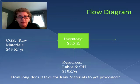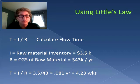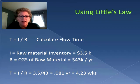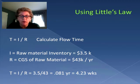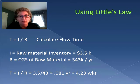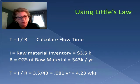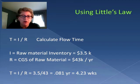So how long does it take? We're going to take a look at Little's Law. We're going to use the calculation of flow time equaling inventory divided by throughput. In this case our inventory is our raw material inventory which was posted as three point five thousand dollars, and our throughput rate is the cost of goods sold of just the raw materials, which was forty-three thousand dollars in a year. So when we calculate the flow time, it equals inventory divided by the throughput rate, and we end up with a flow time of 0.081 years.